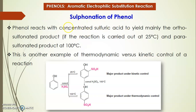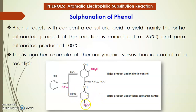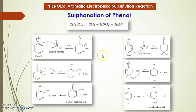Coming to sulfonation: phenol reacts with concentrated sulfuric acid to yield mainly the ortho-sulfonated product if the reaction is carried out at lower temperature (around 25°C, near room temperature), and the para-sulfonated product at high temperature (100°C). This is an example of kinetic versus thermodynamic control. At lower temperature, the ortho-sulfonated product forms quickly as the major kinetically controlled product. At around 100°C, the para isomer is the major thermodynamically controlled product.